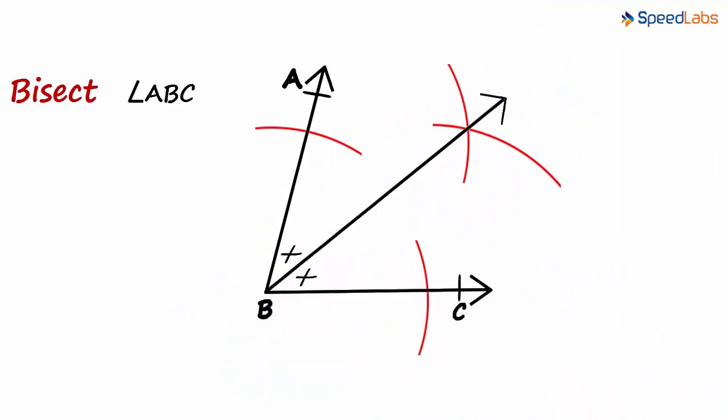These two angles will be equal. Remember, the arms of the angle and the angle bisector are rays. They start from a point and go indefinitely in one direction.